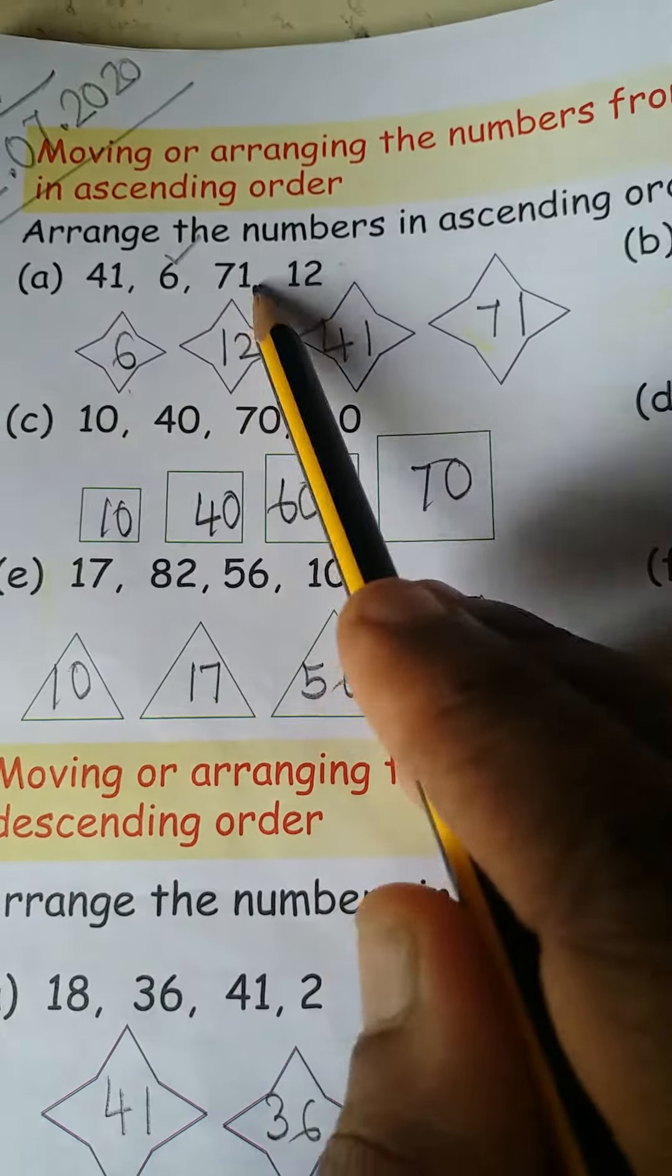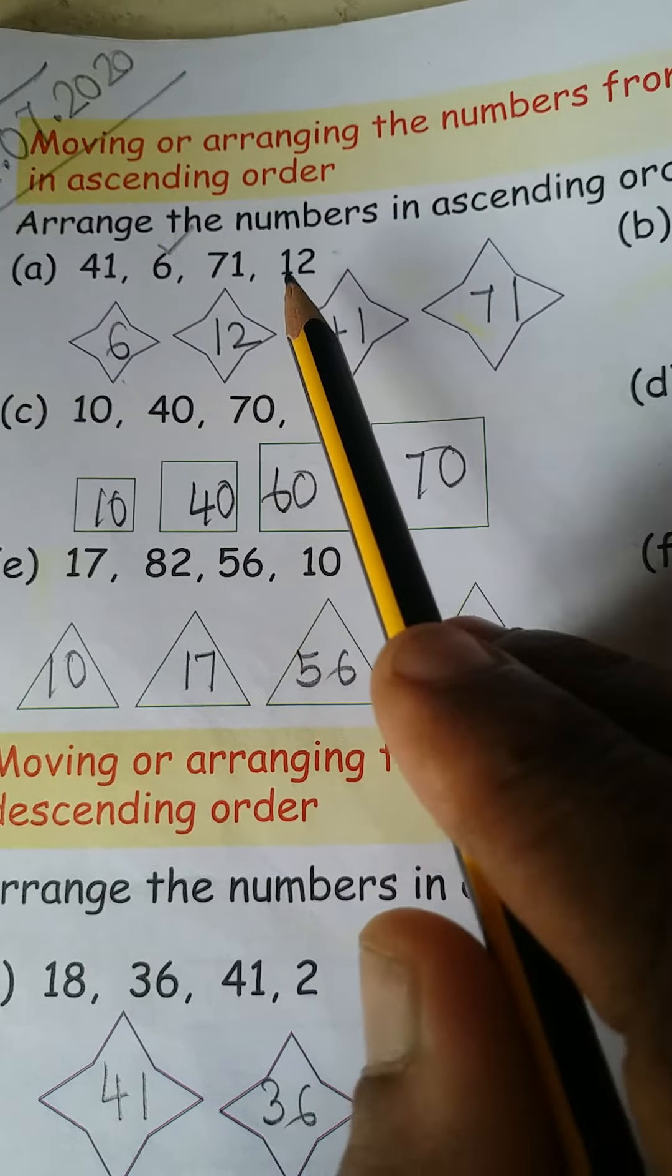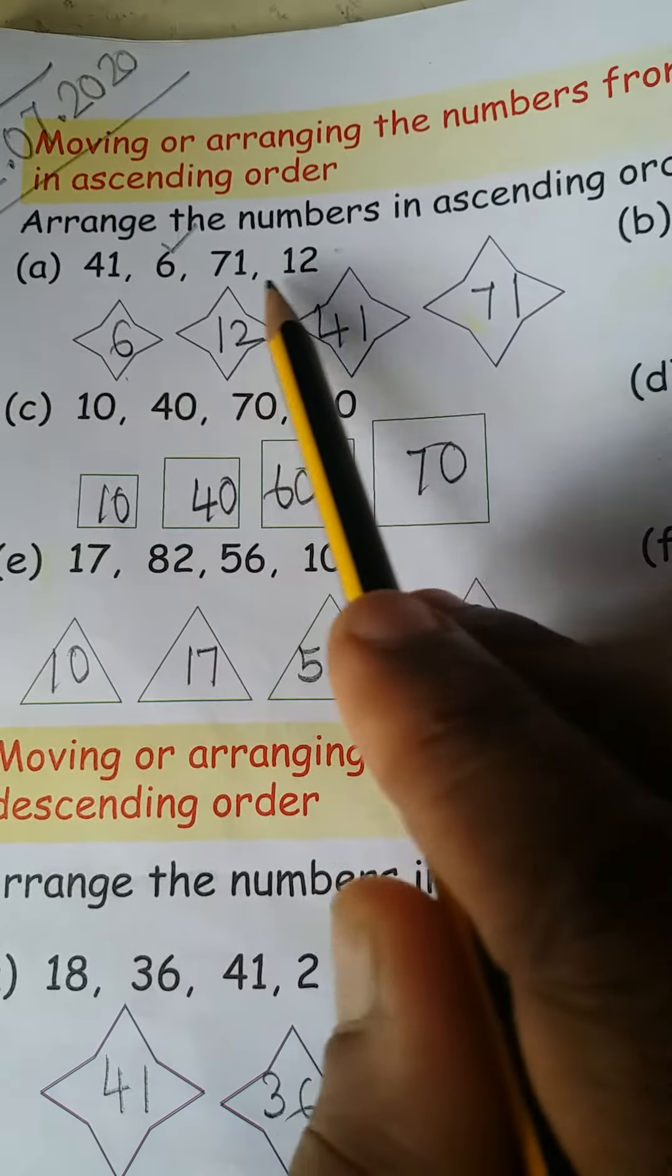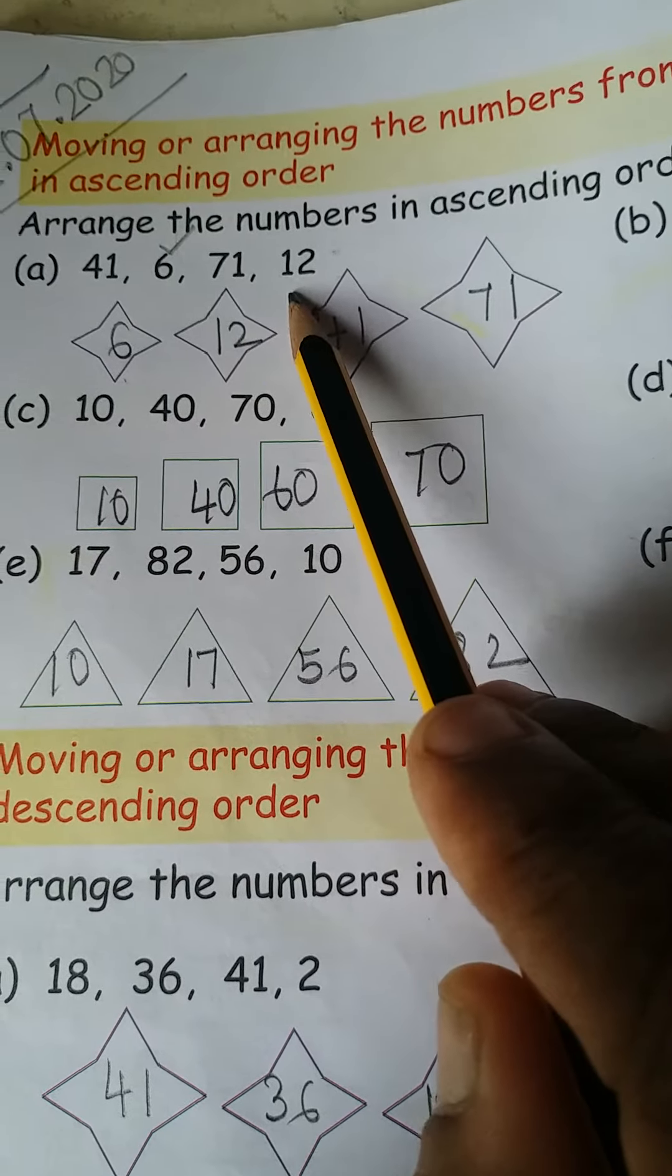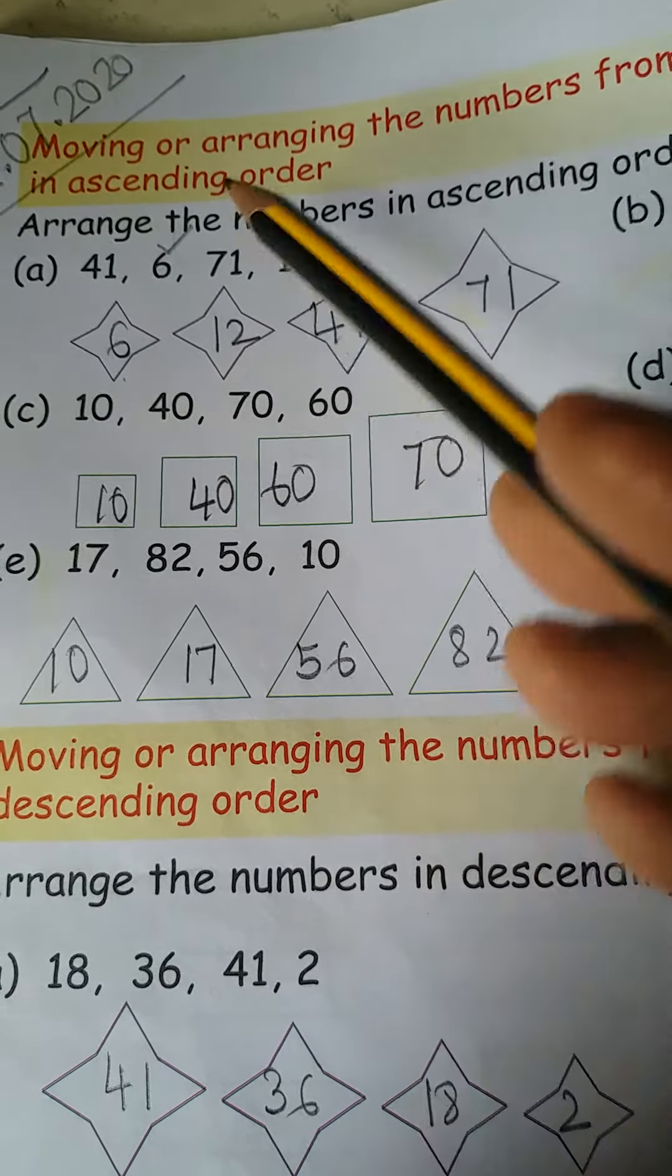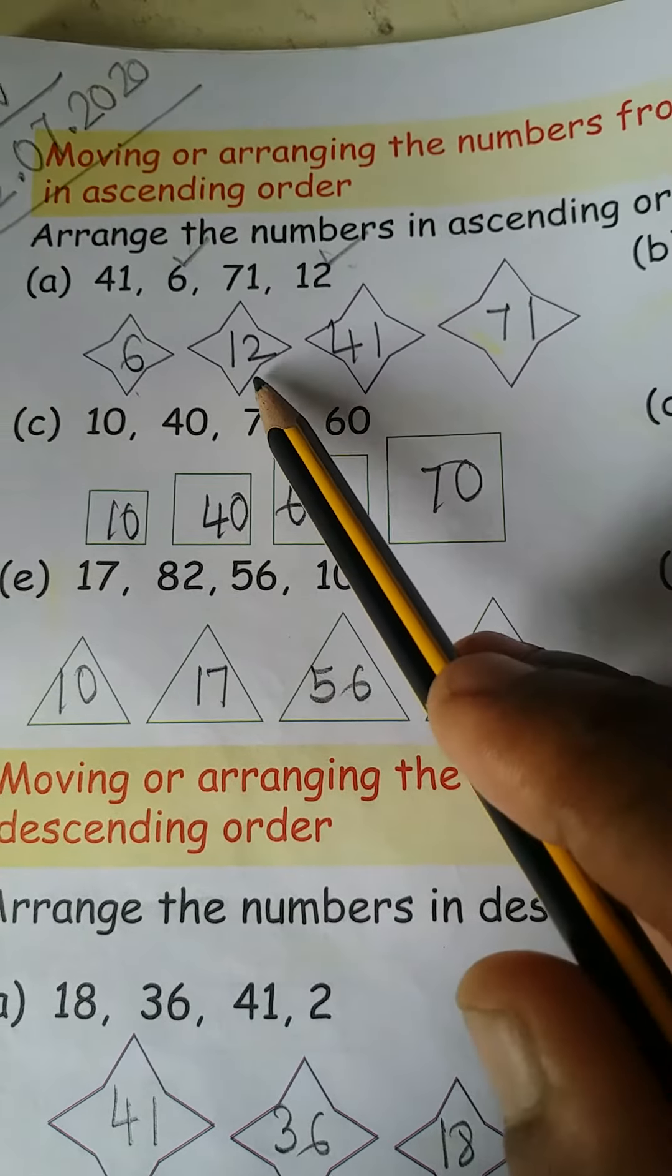Another three numbers are there. We have to choose the smallest number from these three numbers. So 41, 71 and 12. Which number is smallest number? Yes, 12. So tick the 12 and write here 12. Understood?